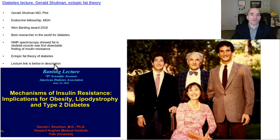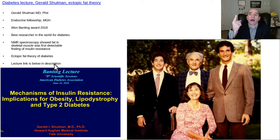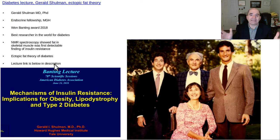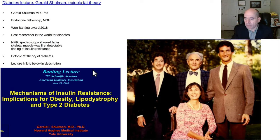He calls his theory of diabetes the ectopic fat theory. Diabetes is actually really complicated, but that's the money finding. I'm going to show you another lecture after this by Roy Taylor. If you only know three resources about diabetes, it would be the Brownlee paper on the unifying theory of diabetic complications, the Gerald Shulman lecture — which is a lot easier to follow than his papers — and then the Roy Taylor talk. Those three, and you are good to go on diabetes.